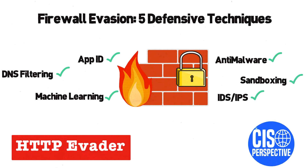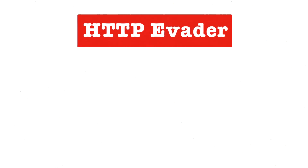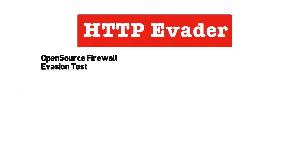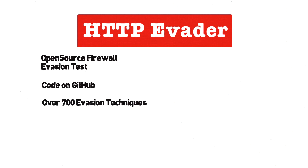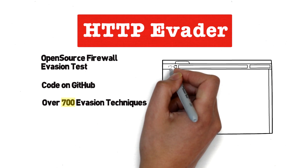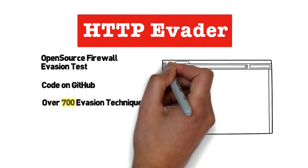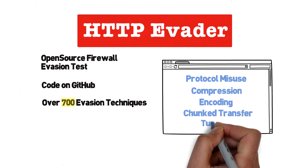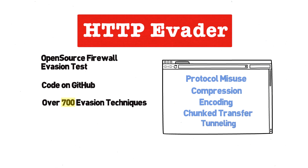Today's video is all about firewall evasion: five defensive techniques. HTTP Evader is a fantastic open source tool for testing your firewall or UTM device against some of the most effective evasion techniques in the wild, used by some of the top vendors and testing agencies. Evader attempts to bypass your firewall's inspection by delivering over 700 different evasion techniques via HTTP or HTTPS. The vast majority can be grouped into the following categories: protocol misuse, compression, encoding, chunk transfer, and tunneling.